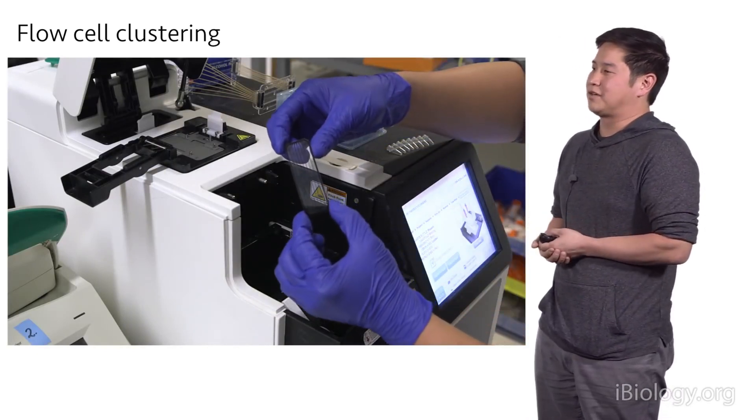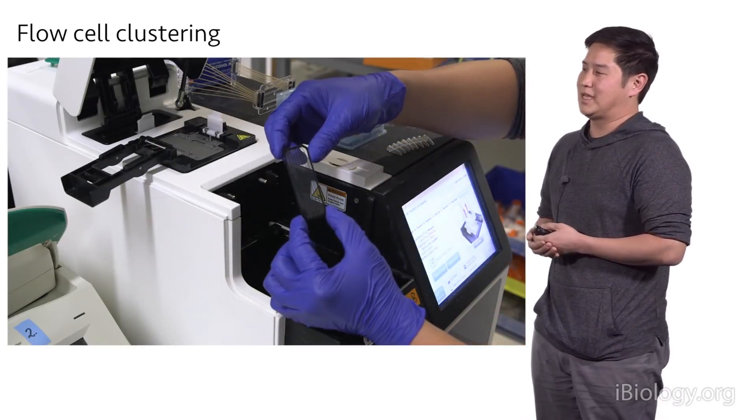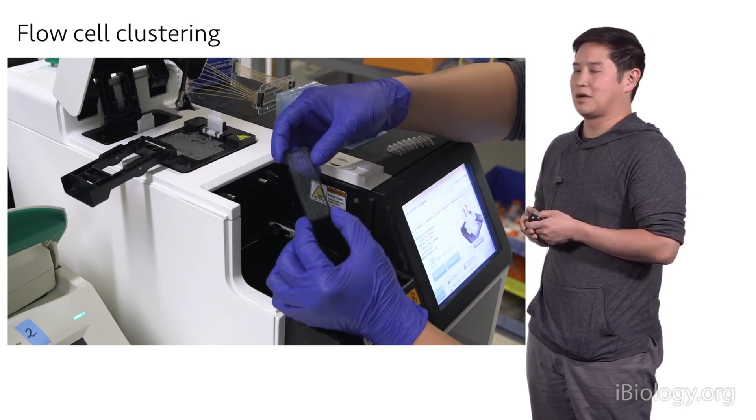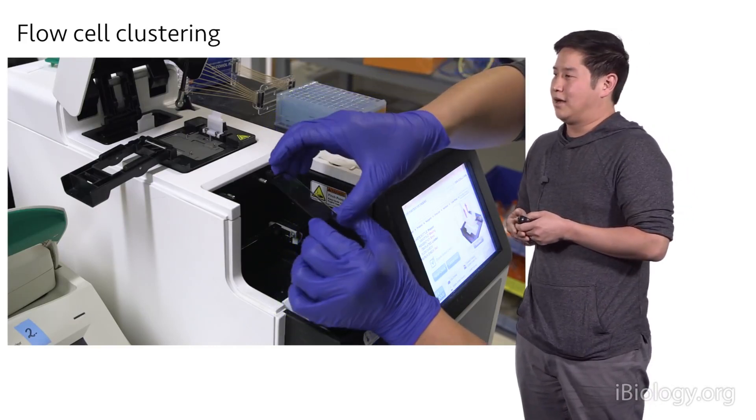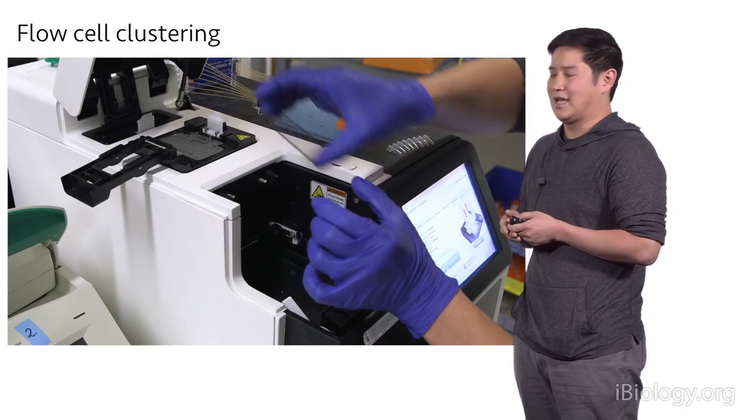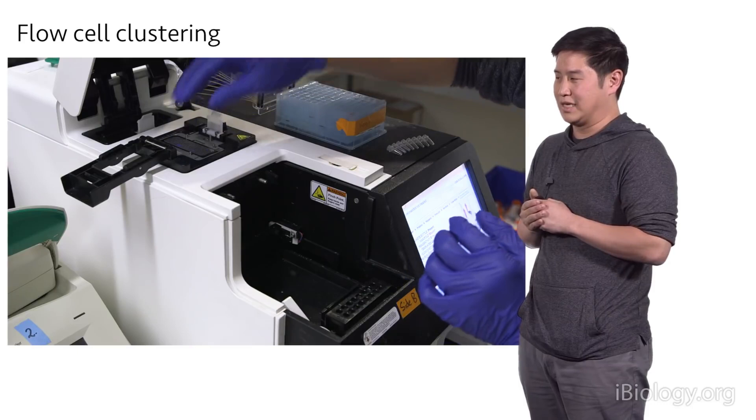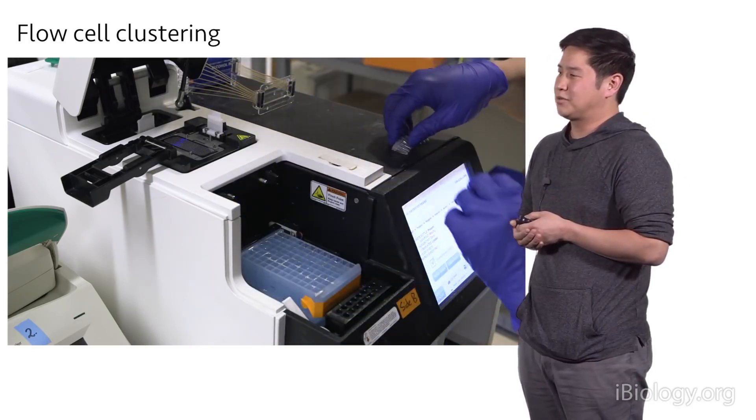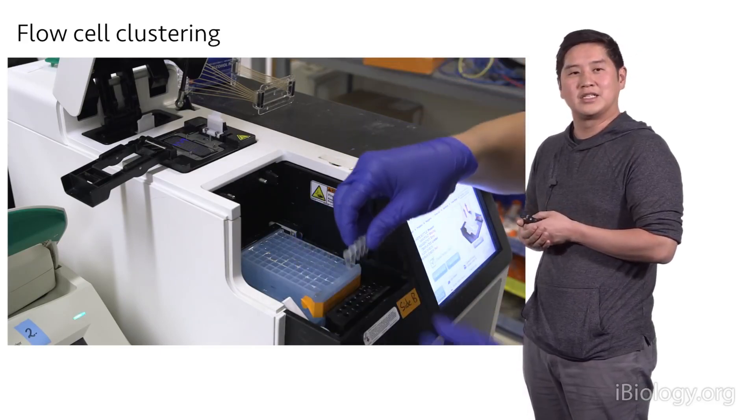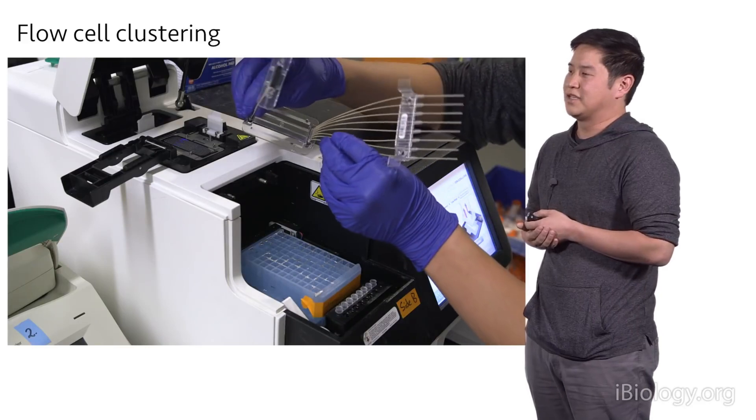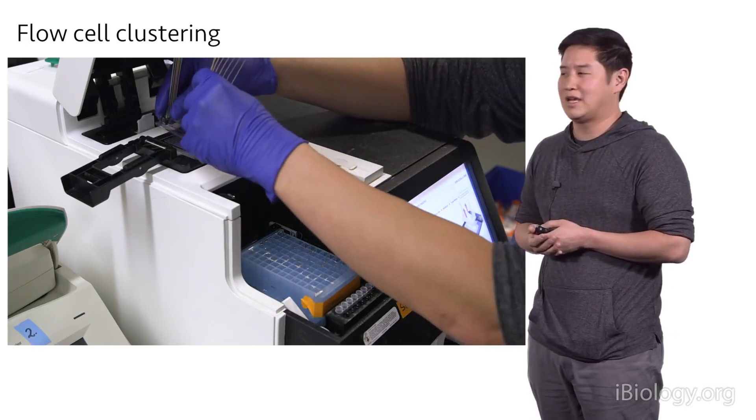And this is the instrument that performs clustering. So first thing we do is we take a brand new flow cell, again this is the size of a standard microscope slide, and then we put it onto the stage of the instrument. And the stage is a region of the instrument that can actually heat and cool to perform a lot of the enzymatic reactions. Next we load a blue plate of the reagents that perform the clustering. And lastly, a strip tube with the eight different samples that are going to be loaded onto that flow cell.